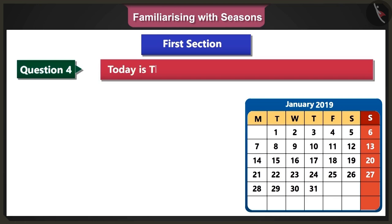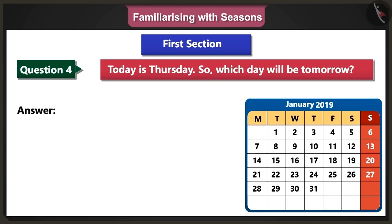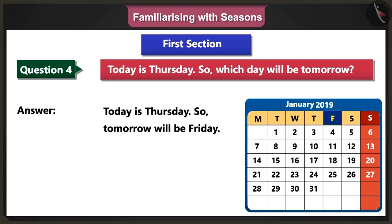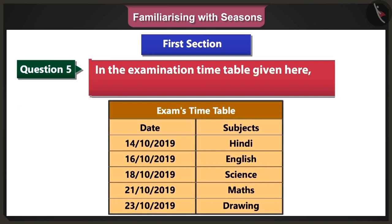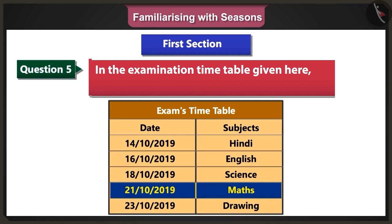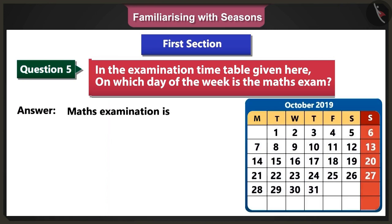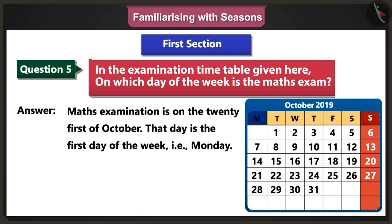Fourth question: Today is Thursday. So, tomorrow will be which day of the week? Answer: Today is Thursday, so tomorrow will be Friday. Fifth question: In the examination timetable given here, on which day of the week is the maths exam? Answer: The maths exam is on the 21st of October. That day is the first day of the week, that is Monday.